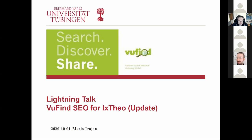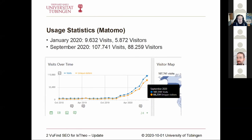My lightning talk is going to be about search engine optimization. For those of you who took part last year in the German summit, I already talked about what we did in the last year. The conclusion was that we did everything that was recommended, but somehow it wasn't really processed by Google in the best way. Since there has been lots of good stuff happening this year, I just wanted to give you an update and share our usage statistics. These are taken from our Matomo installation and all the crawlers have already been filtered out, so this is really the manual visits and unique visitors from browsers, not from any crawlers or bots.